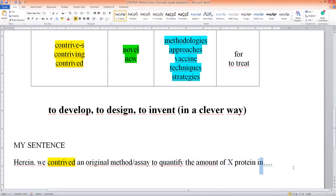If you discovered or found a new method or a pathway or anything, then you can easily use 'contrived' in your manuscript or in your article. Thank you for listening, see you in the next video.